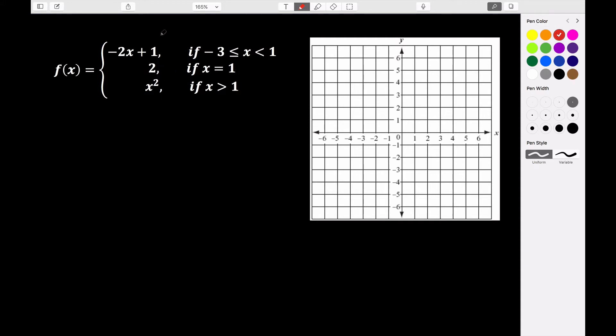So this first graph has endpoints. It's not like all values less than something. It's all values of x in between negative three and one, including negative three. So let's go ahead and just evaluate negative two x plus one at our endpoints and see what those values are. So negative two times negative three plus one, that's a positive six plus one is seven. So that gives us the ordered pair negative three, seven.